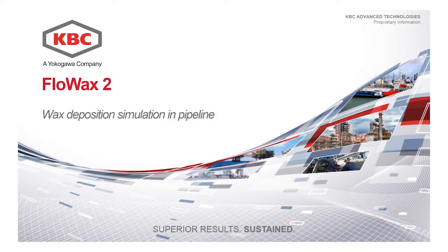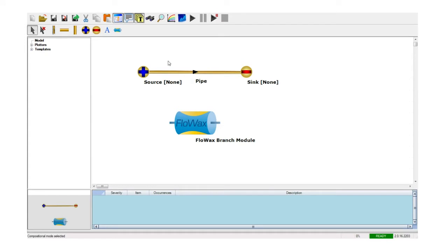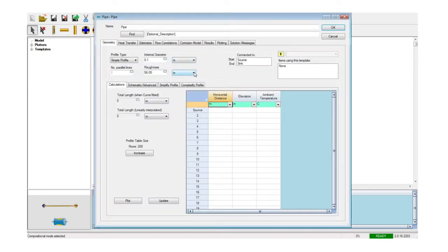The new release of Flow Wax, Flow Wax 2, carries a completely renewed interface as well as new and improved functionalities to enhance the capabilities of flow assurance and production engineers to correctly predict and mitigate potential problems of wax deposition in transport and production lines. Upon opening the new interface, based on the technology of Maximus 620, Flow Wax opens a simple template for the creation of the wax deposition case.